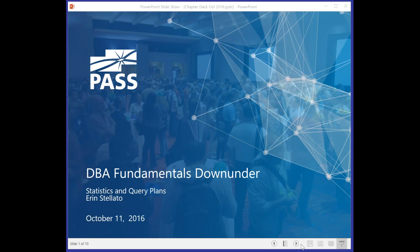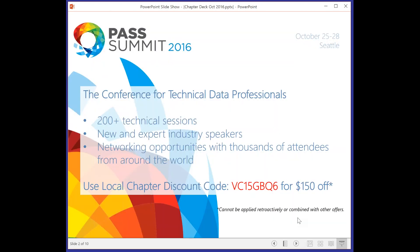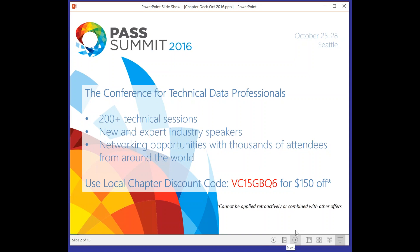Before I hand over to Erin, I've just got a couple of housekeeping items to run through. PASS Summit is coming up in a couple of weeks' time. There's still time to buy tickets - if you use the discount code shown, you'll get $150 off your week-long session ticket. If you haven't bought already, I do suggest you look at buying that. There are some fantastic speakers and sessions available for that Summit.